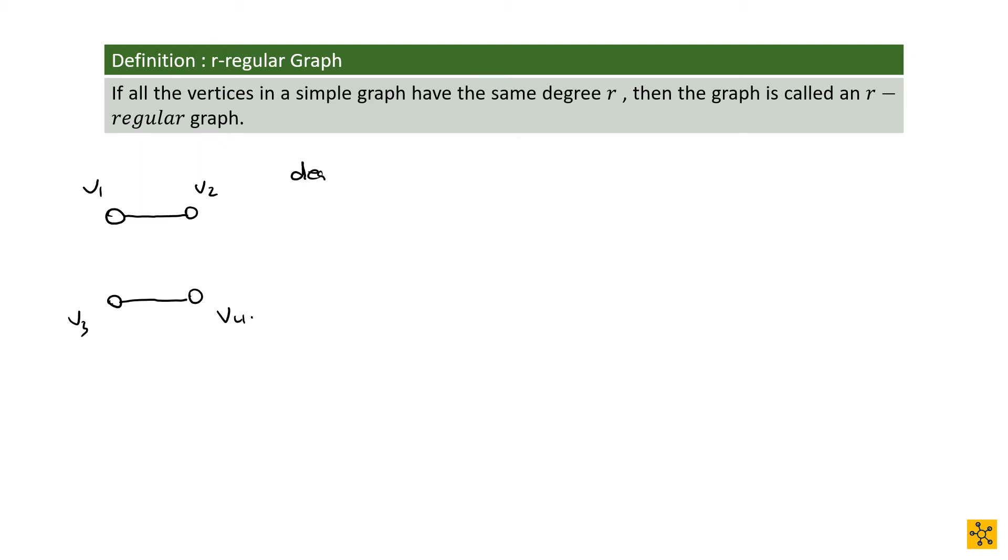We can check that. Degree of V1 is equal to one. Degree of V2 is equal to one. Degree of V3 is equal to one. And the degree of V4 is equal to one. That means it's one regular.